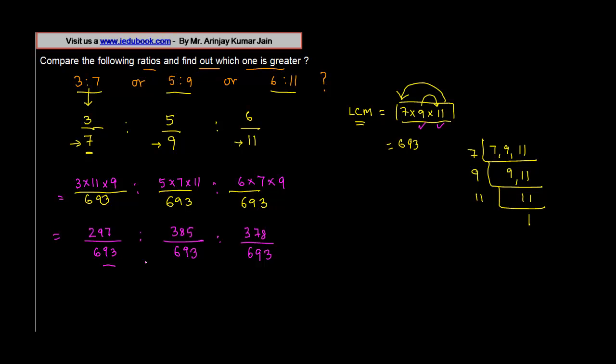Now when the denominators are the same, the number with the greatest numerator is the bigger fraction. Accordingly, 385, which is having the greatest numerator, is the greatest one. So the ratio of 5 is to 9 is greater amongst these three given ratios.